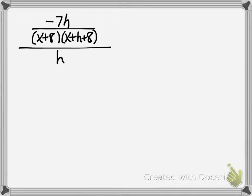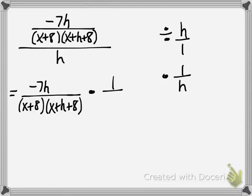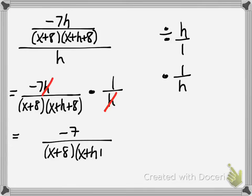So we have negative 7h divided by x plus 8 times x plus h plus 8, and that entire thing is still divided by h. Dividing by h is the same as multiplying by the reciprocal, 1 over h. So I rewrite this as a multiplication problem. The h in the numerator divides out with the h in the denominator, and we end up with negative 7 divided by x plus 8 times x plus h plus 8. This is our simplified result.